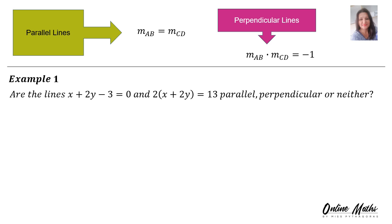Example 1: are the lines parallel, perpendicular, or neither? We need to find the gradient for the first line and the gradient for the other line, and then compare. First line: x plus 2y minus 3 is equal to 0. We have to write this line in standard form.